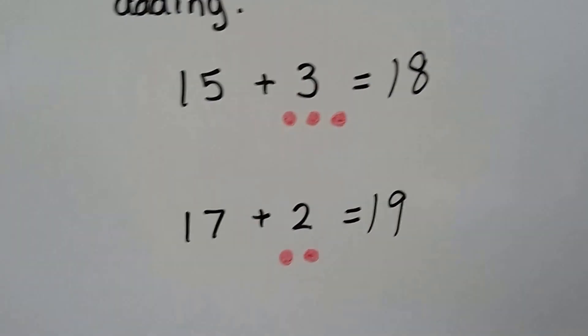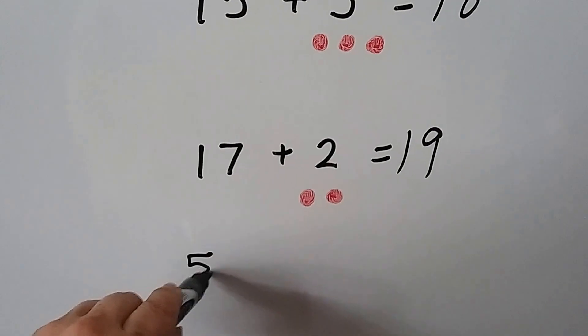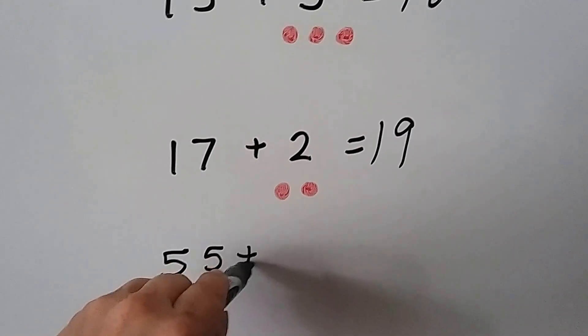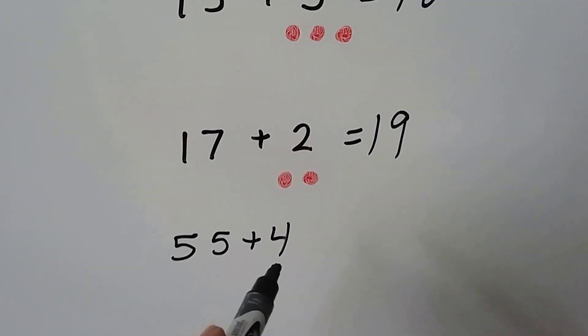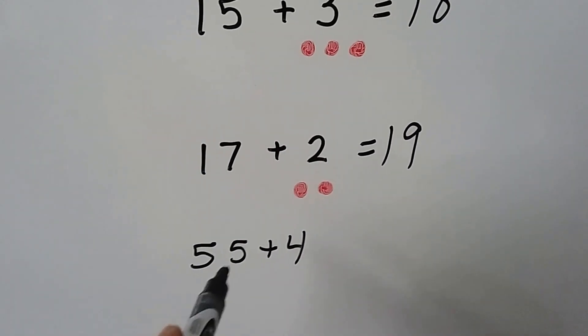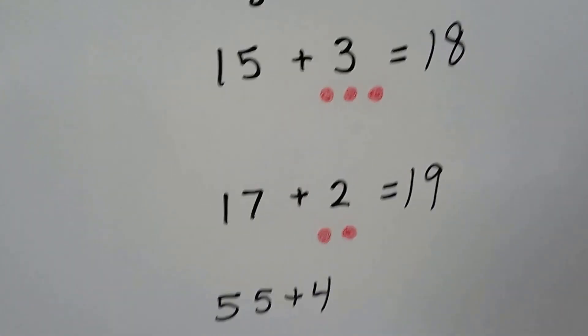You can even do real big numbers. You could do 55 plus 4. You can say 55, 56, 57, 58, 59. You just start at that bigger number and count on.